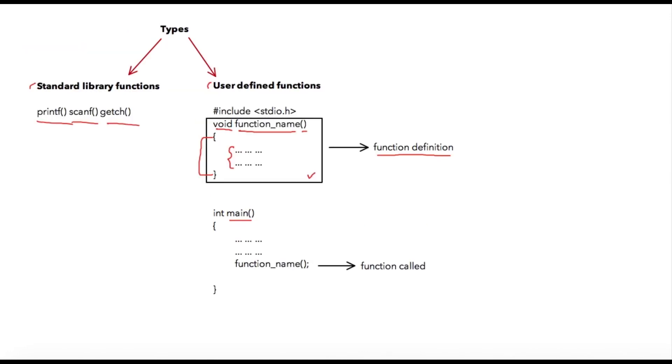Inside the main function, you can write your regular instructions. Then you can call your defined function like this: for calling a function, you just need to write the function name and parenthesis, after that you just need to add a semicolon.